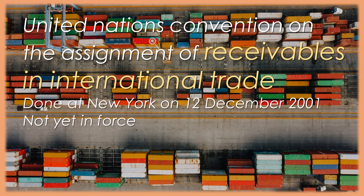Article 20. Modification of the original contract. 1. An agreement concluded before notification of the assignment between the assigner and the debtor that affects the assignee's rights is effective as against the assignee, and the assignee acquires corresponding rights. 2. An agreement concluded after notification of the assignment between the assigner and the debtor that affects the assignee's rights is ineffective as against the assignee unless: a. the assignee consents to it; or b. the receivable is not fully earned by performance and either the modification is provided for in the original contract or, in the context of the original contract, a reasonable assignee would consent to the modification. 3. Paragraphs 1 and 2 of this article do not affect any right of the assigner or the assignee arising from breach of an agreement between them.